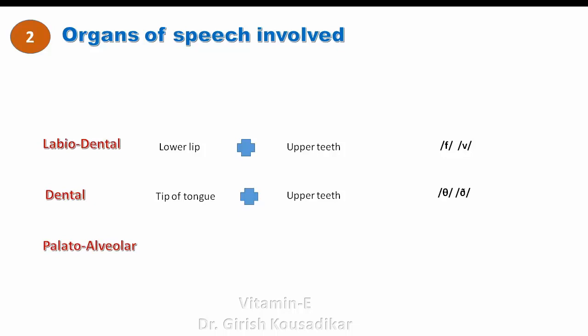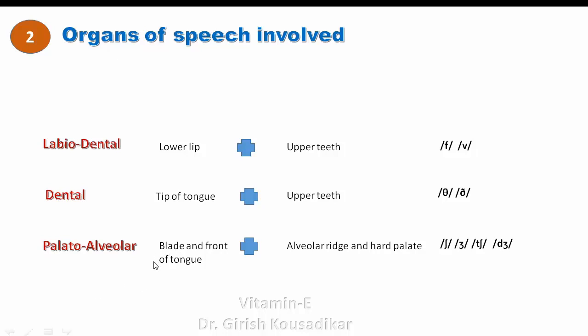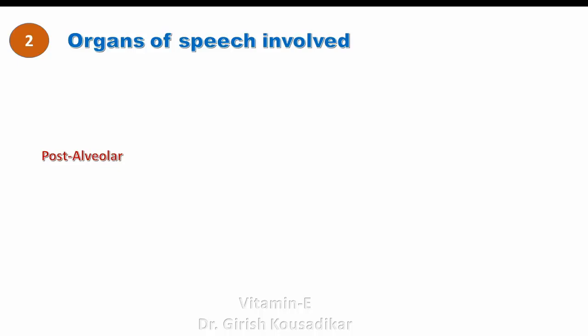The next term is palato-alveolar. It is a combination of the blade and front of the tongue, which makes contact with the alveolar ridge and hard palate. Examples include /ʃ/ (sh), /ʒ/ (j), /tʃ/ (ch), and /dʒ/ (j). In this case the tip is not active — the blade and front of the tongue become active and make a closure with the alveolar ridge and hard palate.